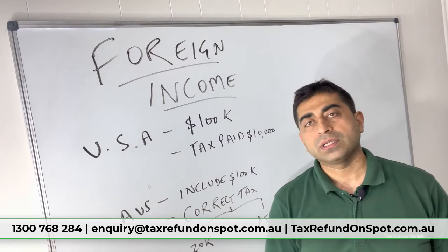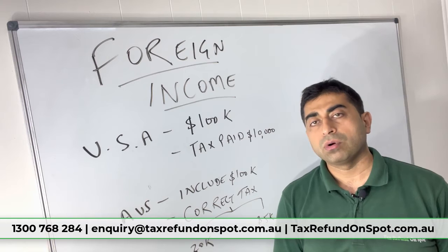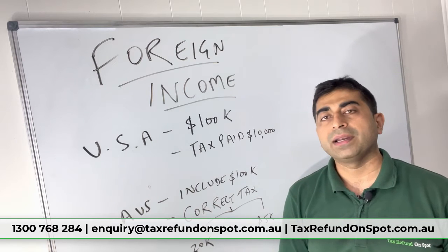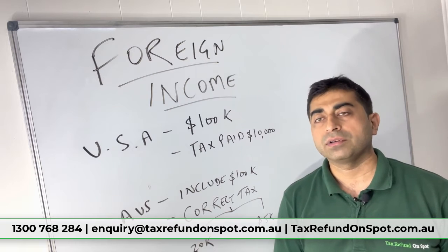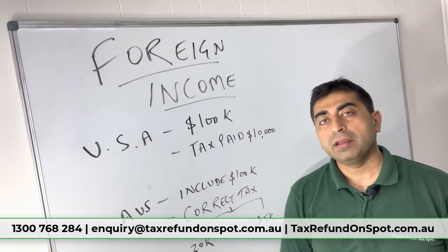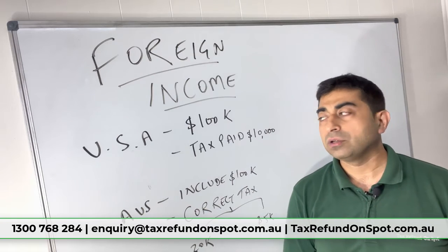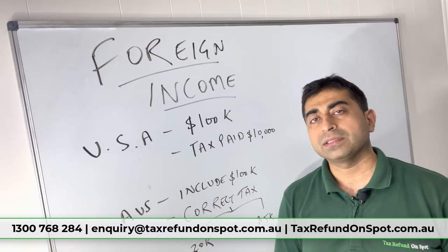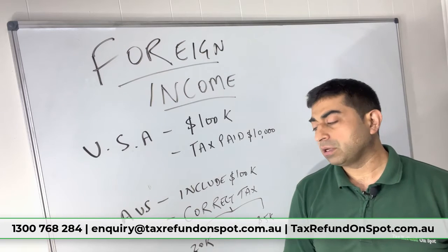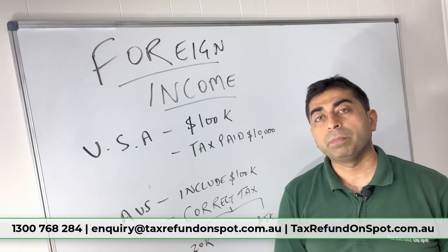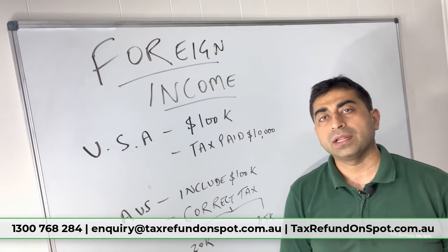You have only paid ten thousand, so you will be paying in Australia twenty thousand more tax — because you only paid ten thousand dollars there, which is ten thousand Australian dollars after conversion. Now if in this case the actual tax payable was only five thousand, you have paid ten thousand Australian dollars tax but the actual tax payable in Australia was only five thousand, which means you paid five thousand more.